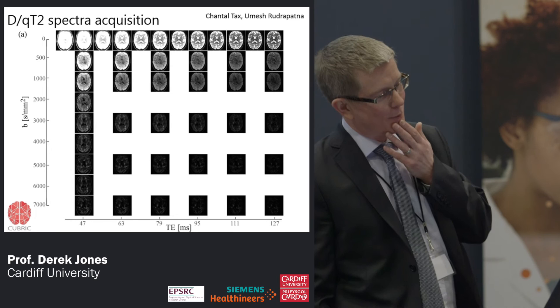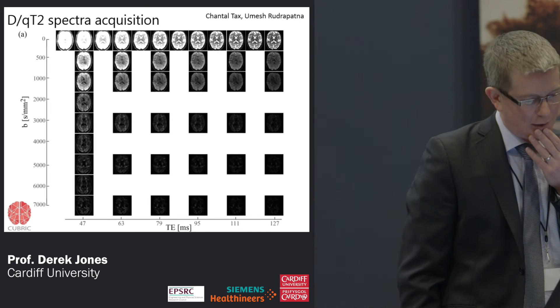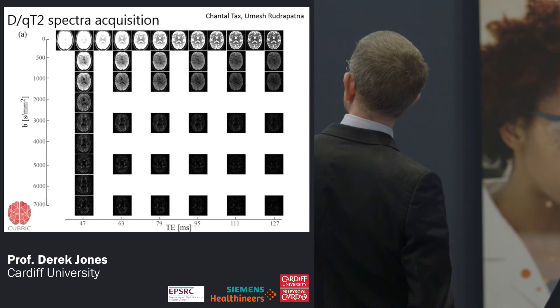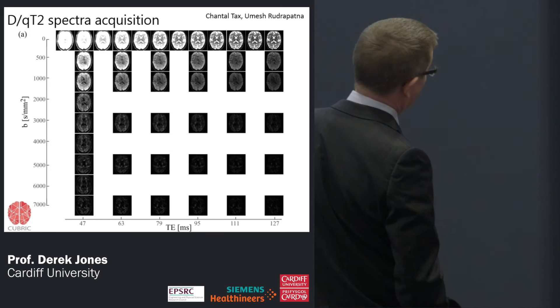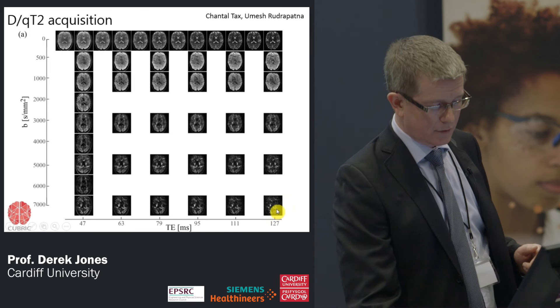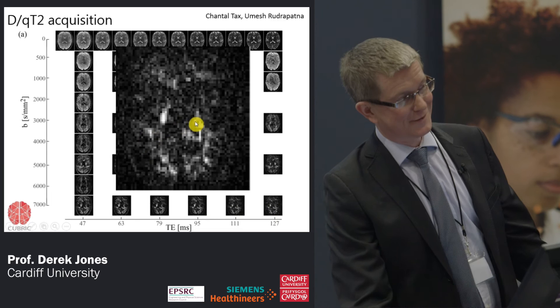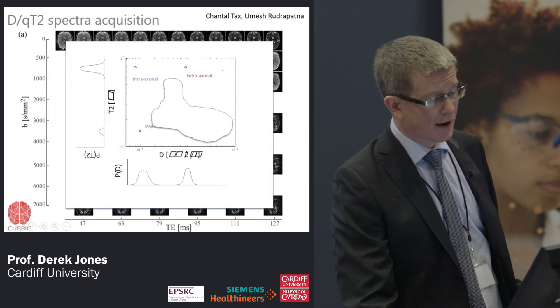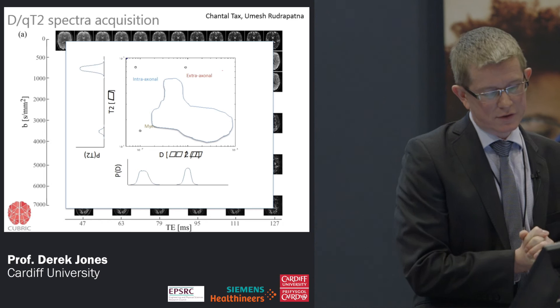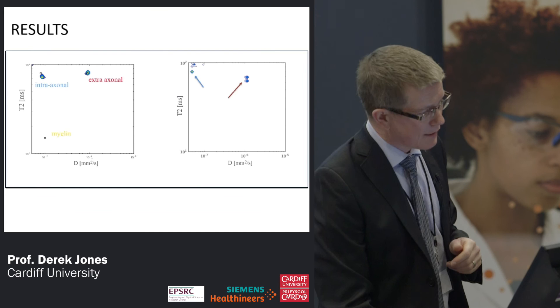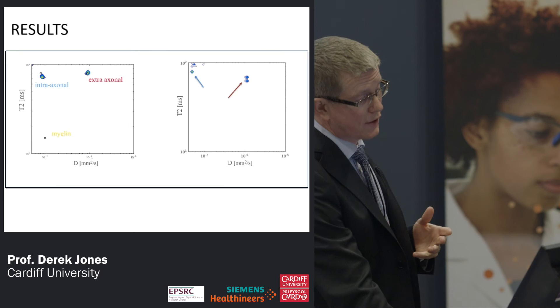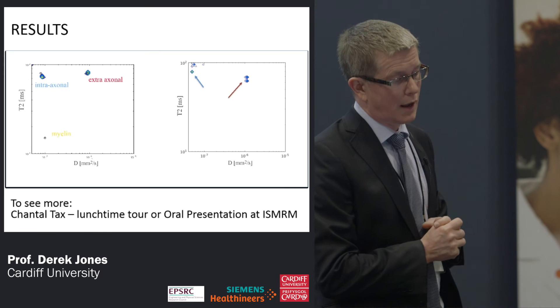To answer Greg Stanisz's question, 'why don't you marry T2 and diffusion?' — well, this is the courtship that will probably lead to a marriage. This is work led by Chantal, helped by Umesh. You can see we're varying the echo time along one axis and going up to b-values of 7000. We didn't anticipate we would see much signal at high b-value and long TE, but if you rescale you can see there's actually quite a bit of signal remaining. The idea is to do 2D correlation experiments to pull out the different components — we've got some promising early results.